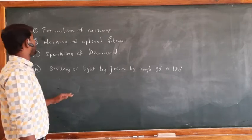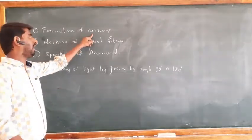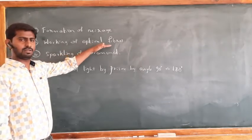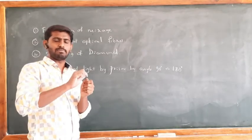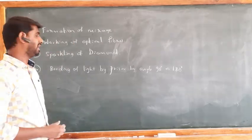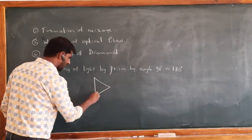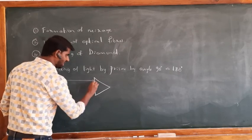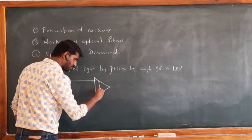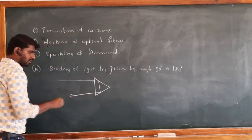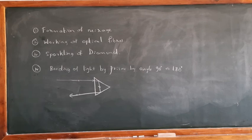The principle of TIR is used in the following cases: formation of mirage, working of optical fibers, sparkling of diamonds (diamond is cut such that TIR causes a sparkling effect), and bending of light by a prism. Light can be bent at 90 degrees or at 180 degrees using TIR inside a prism.